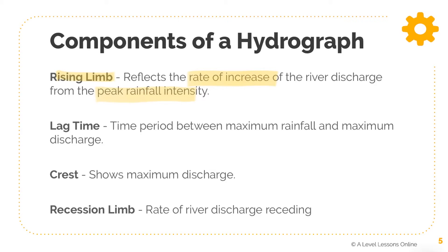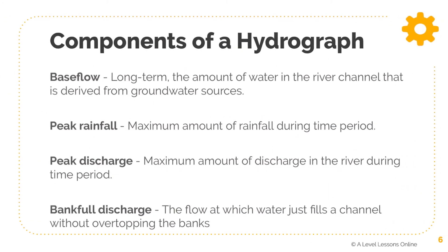Next, lag time is the time period between the maximum amount of rainfall and the maximum amount of discharge. The crest shows the maximum amount of discharge, while the recession limb is the opposite of the rising limb — it is when the amount of discharge is decreasing, basically receding.